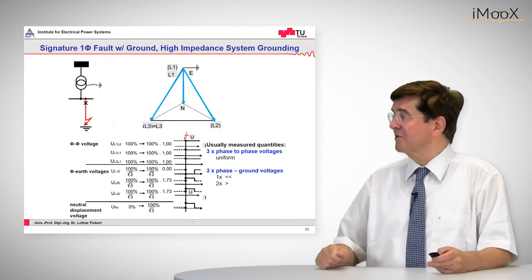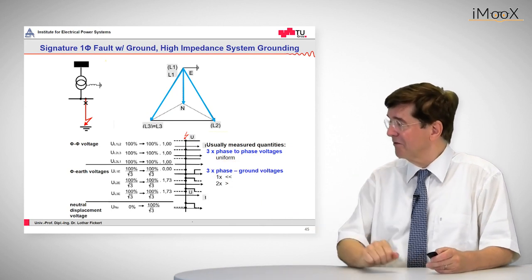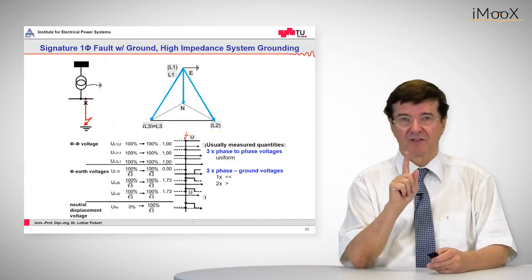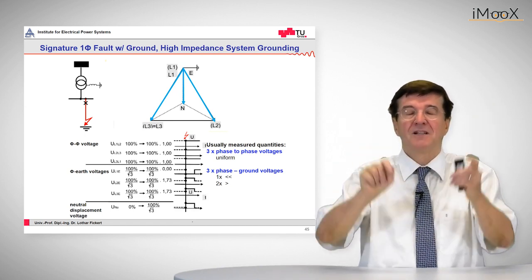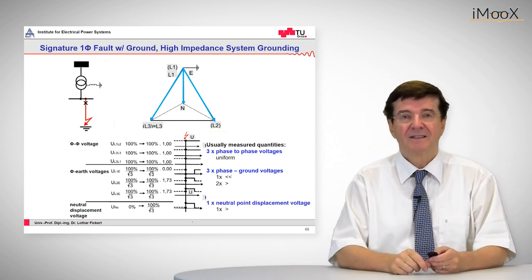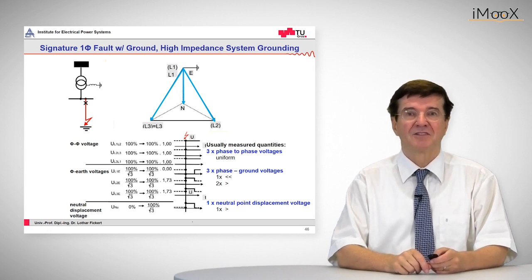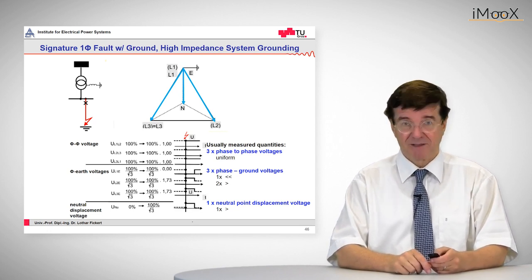But when it comes to the second set of voltages, the phase-to-ground voltage, we see that one voltage collapses and two voltages rise. And another indication for involvement of ground, we have a very substantial neutral point displacement voltage.